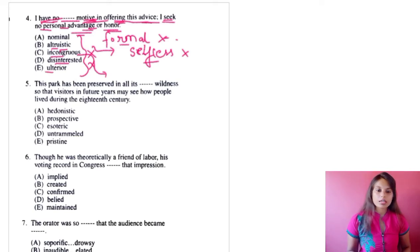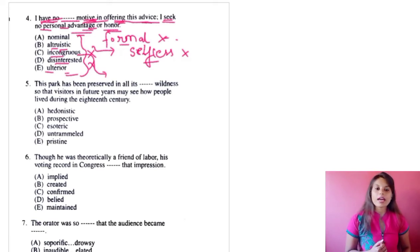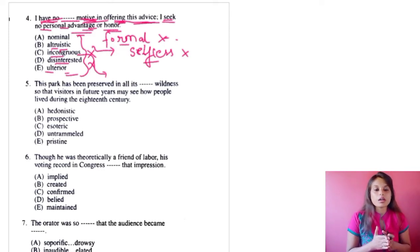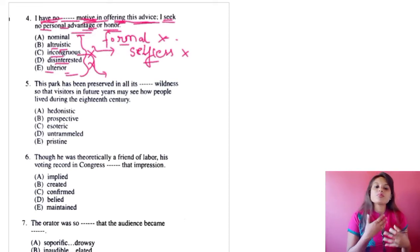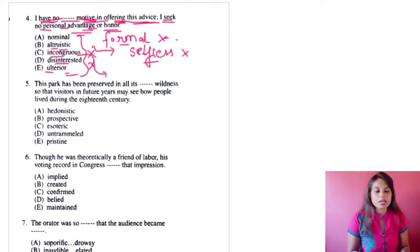The last option is 'ulterior,' which means underlying or secondary. 'I have no underlying motive in offering this advice' — this person is saying that beneath the words he is saying, he has nothing else in his heart. He is speaking his heart out; there is no secondary motive. Whatever he is saying is clear-cut. So option E, ulterior, is the correct answer.